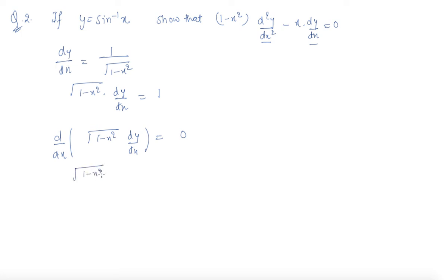(1 - x²) d²y/dx² - first as it is, differentiation of second, plus differentiation of first keeping second as it is, times 2x. So from here what I am getting is...